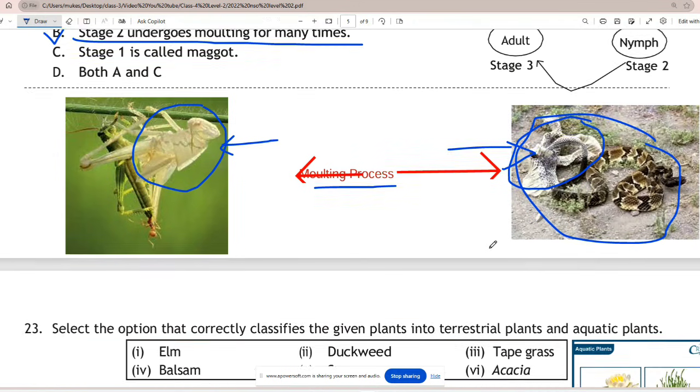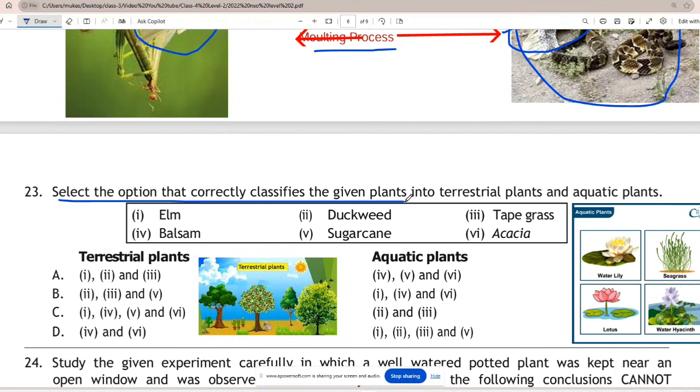Question 23: Select the option that correctly classifies the given plants into terrestrial plants and aquatic plants. The correct answer is C. Impatiens balsam, sugarcane, acacia are terrestrial plants. Duckweed and tape grass are aquatic plants. Terrestrial plants grow on land, while aquatic plants grow in water.